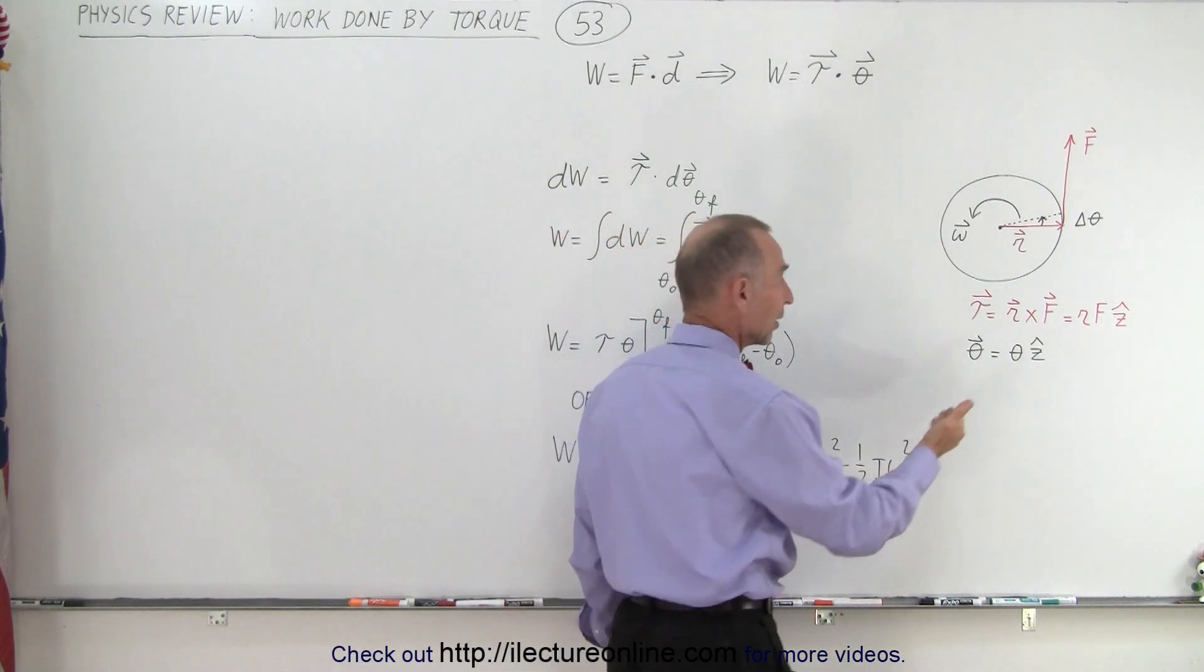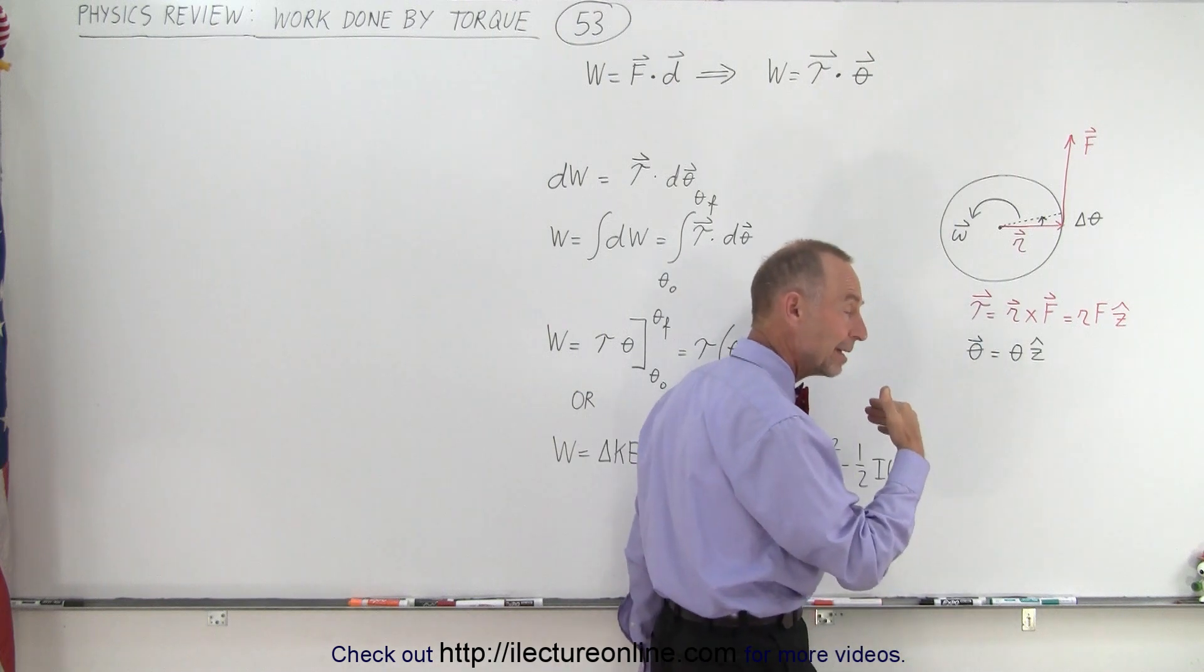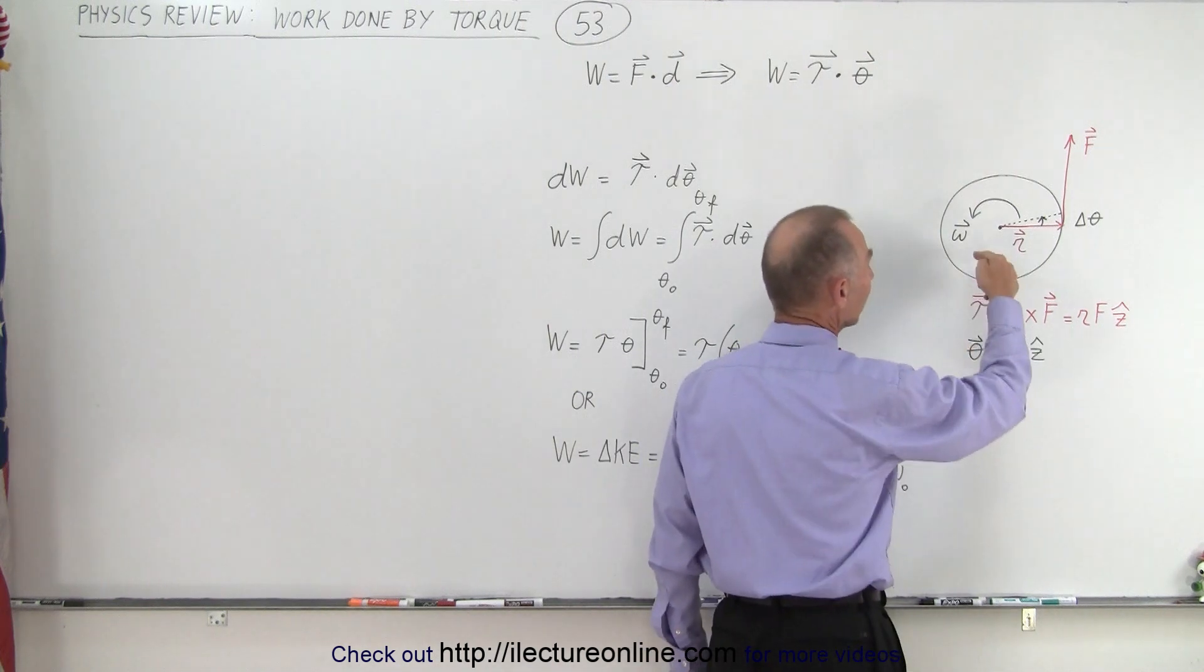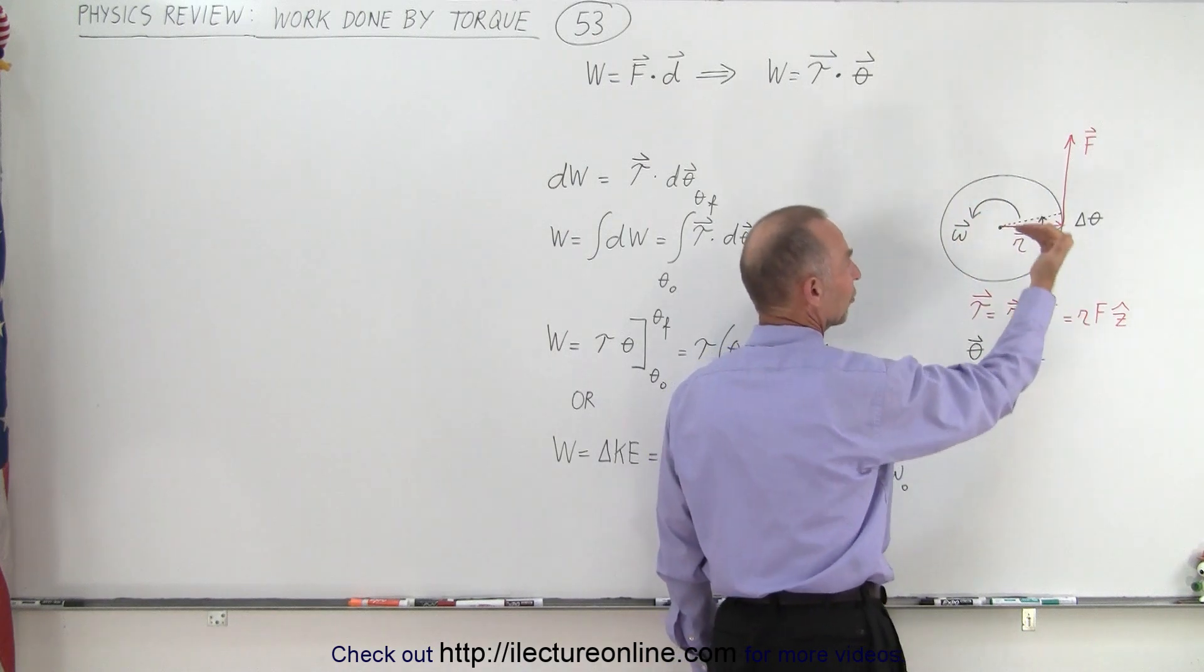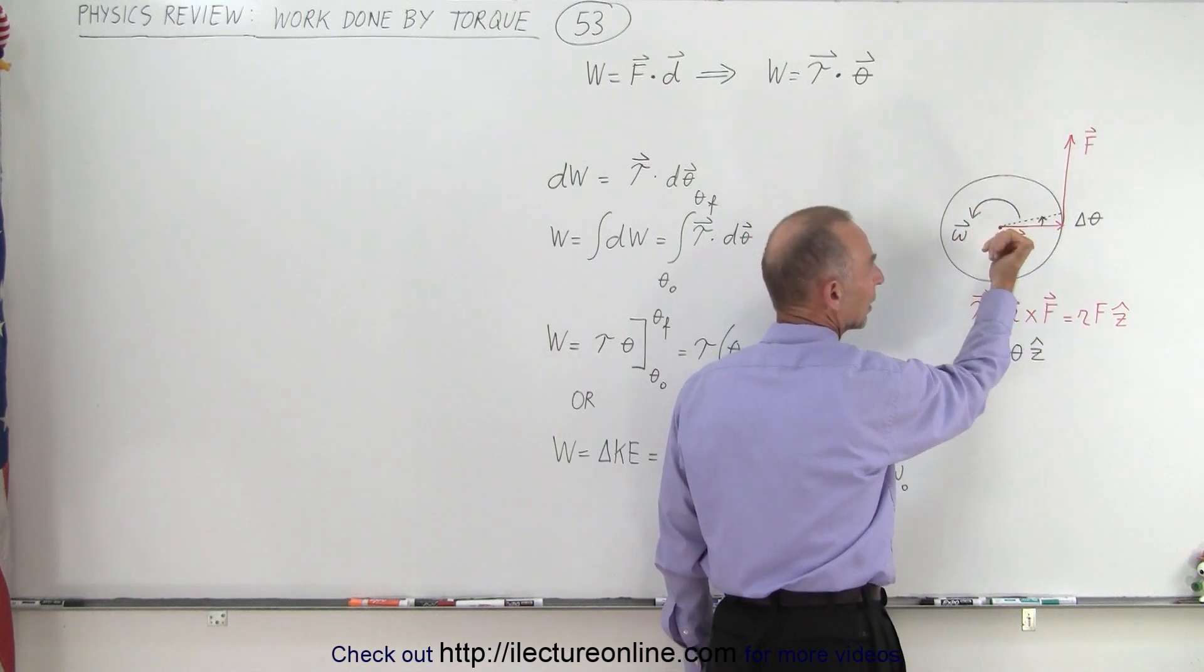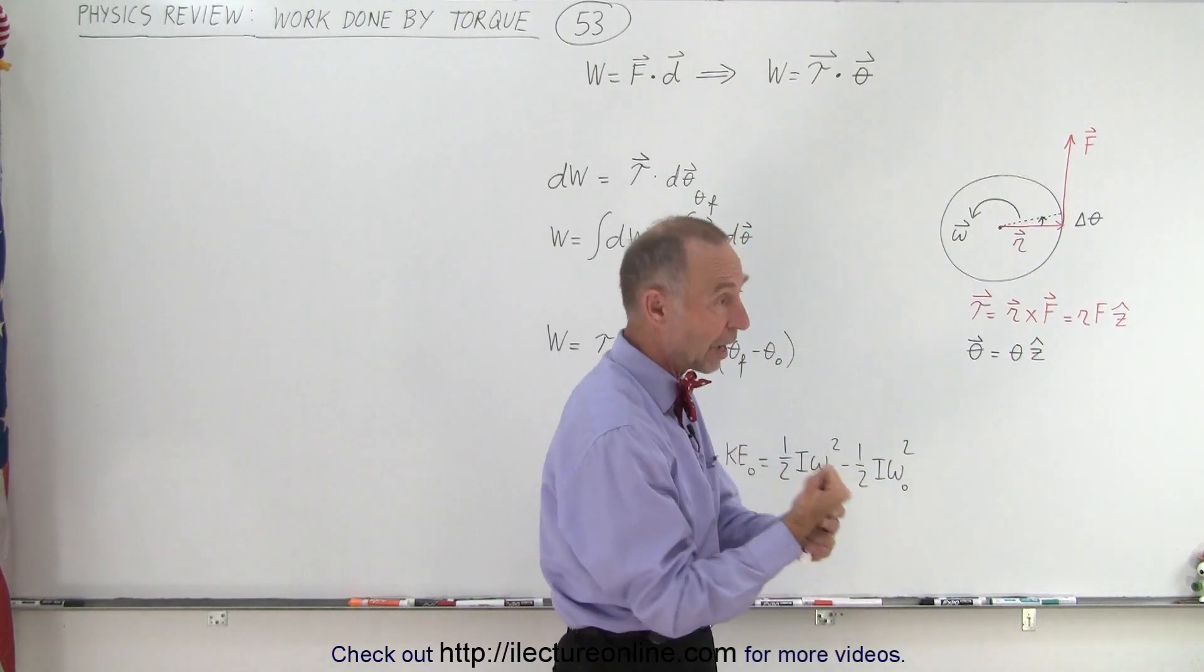If you think of theta as being a displacement in angle, notice that we take the vector quantity of it. Think of the angular velocity as a vector quantity. Curl your fingers in the direction of omega—if your thumb points outwards, that means the direction of omega is outward as well.